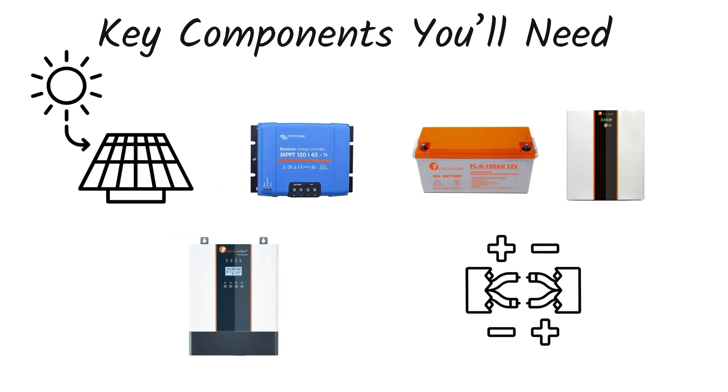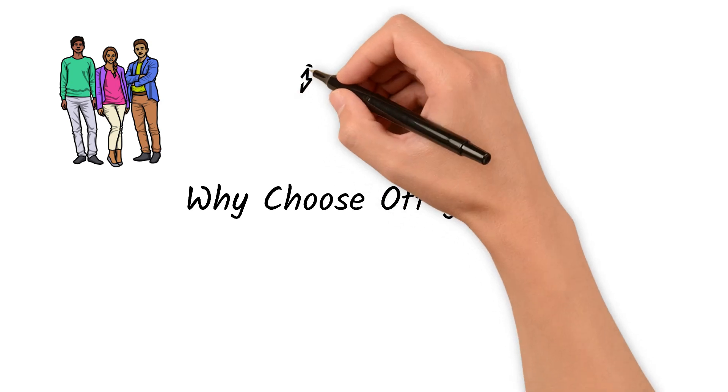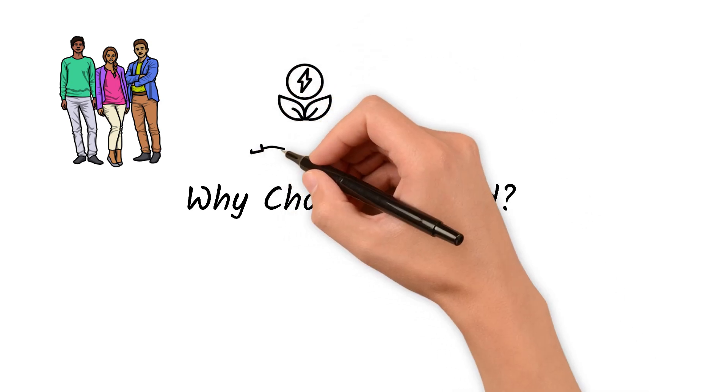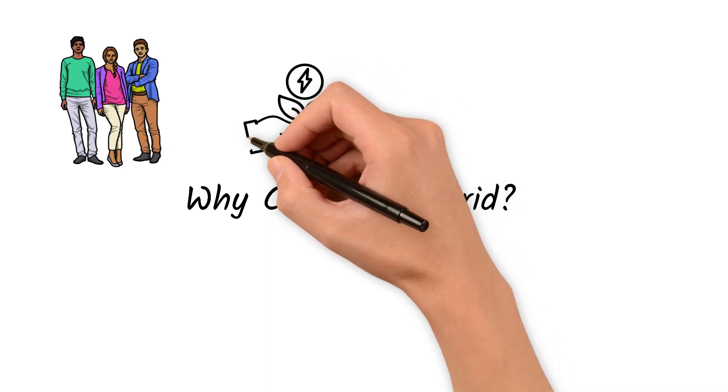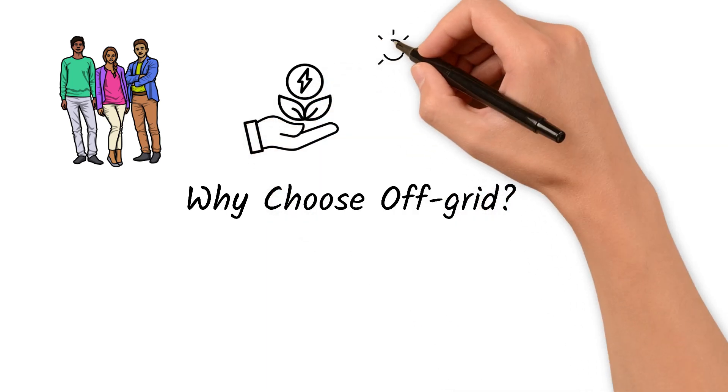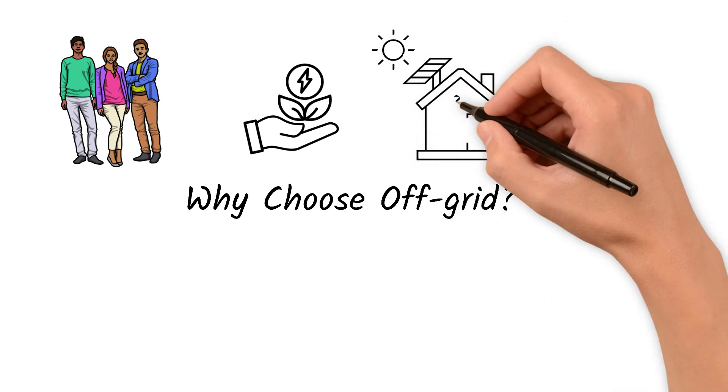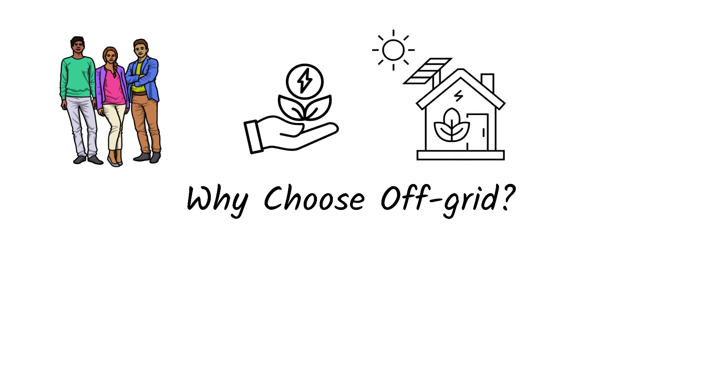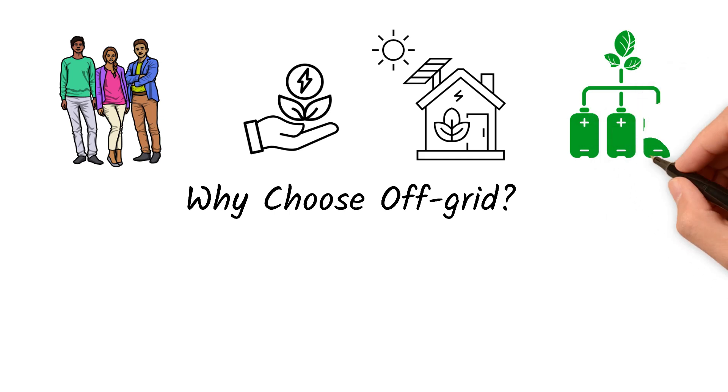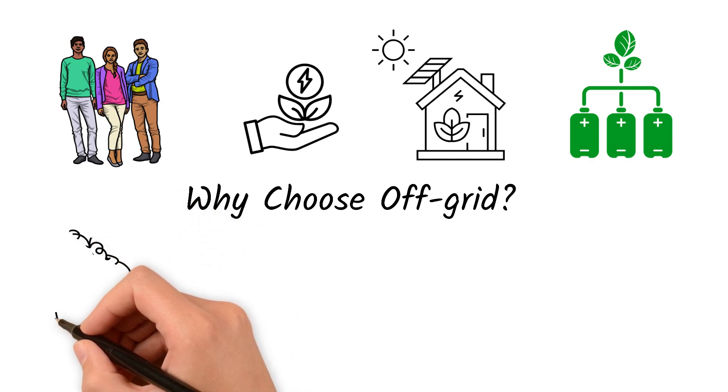Missing any one of them will compromise your entire system. Here's why more Kenyans, especially in rural areas, are choosing off-grid solar. The first reason is complete energy independence. This means you have freedom from Kenya Power blackouts. The second thing is it's ideal for remote homes, which is perfect for areas without any grid access. The other reason is that it's environmentally friendly, because you're replacing diesel generators with clean energy.